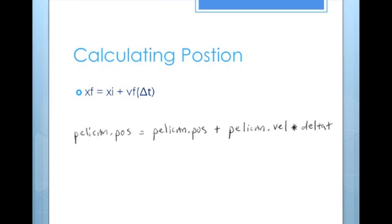Finally, we can calculate the position using the definition of velocity. X final equals X initial plus V final times delta t. This line of code is shown here. Again, remember to write the correct variable names in order for the code to run properly.